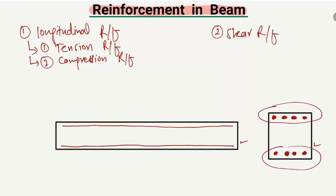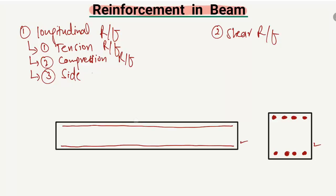These are the compression reinforcement provided in the compression zone, which is at the top of the beam. The tension zone is at the bottom. When reinforcement is provided in the compression zone, it is known as compression reinforcement. They are also provided to hang or support the vertical shear reinforcement, which I will discuss later. The third type of longitudinal reinforcement is the side face reinforcement.